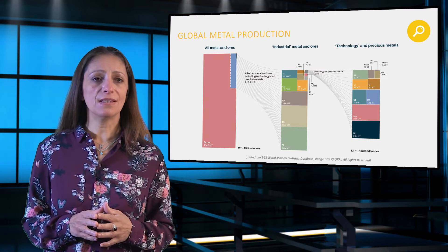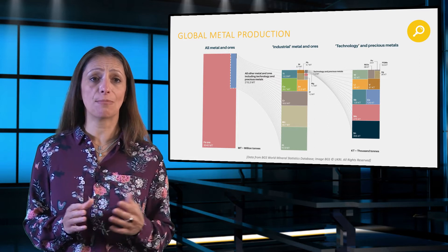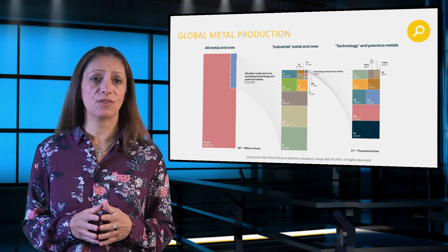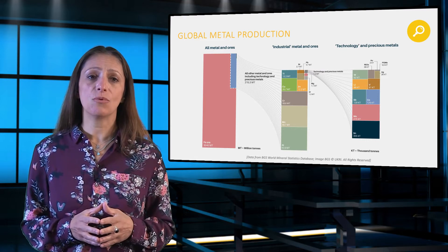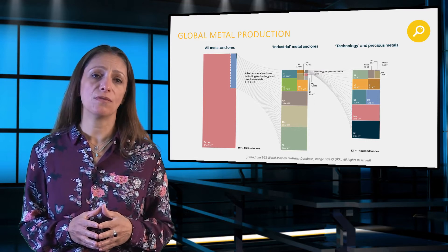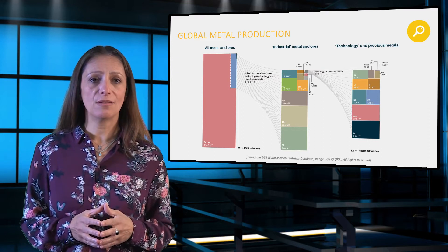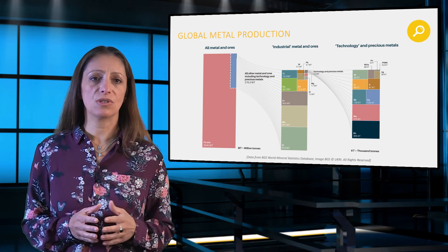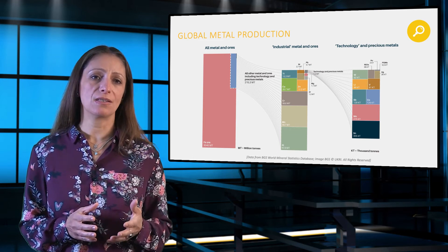If data uncertainty is high, we then end up with models and analysis — for example, supply and demand scenarios or identification of risks associated with critical raw materials — in which we have lower confidence. Unfortunately, industry and policy makers often use this to make decisions which could affect supply chains and global markets.